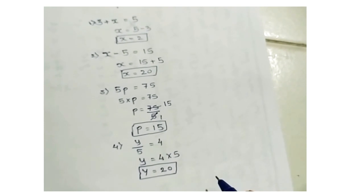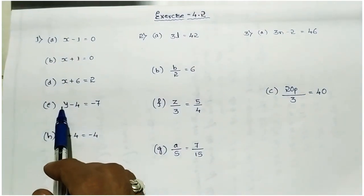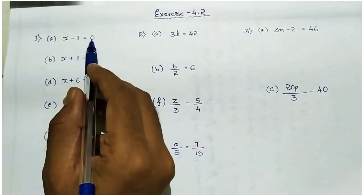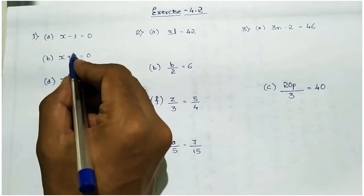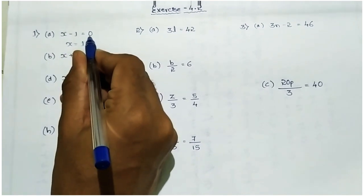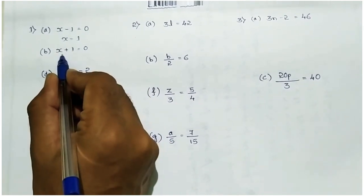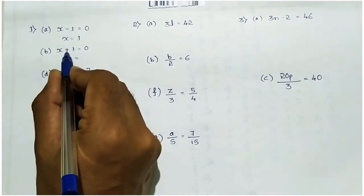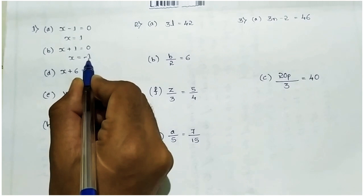Now directly going to exercise 4.2. In first main, first a: x minus 1 equal to 0. If you take minus 1 to the right side it becomes plus, so x equal to 1, because 0 plus 1 is 1. Second: x plus 1 equal to 0. If you take 1 to the right side it becomes minus 1, so x equal to minus 1, because 0 minus 1 is minus 1.